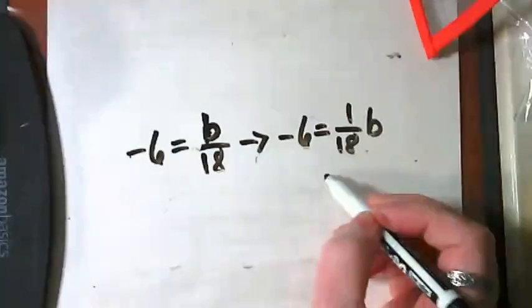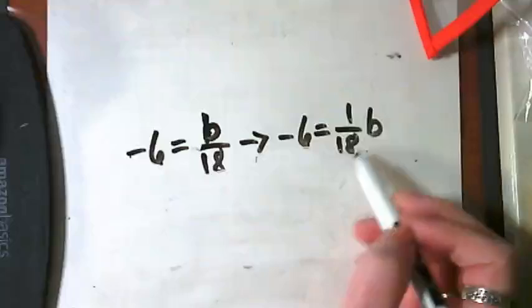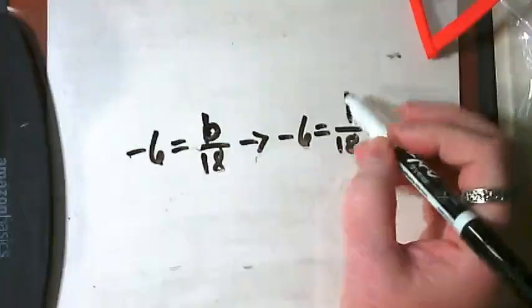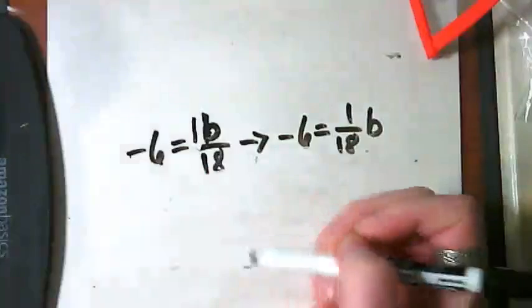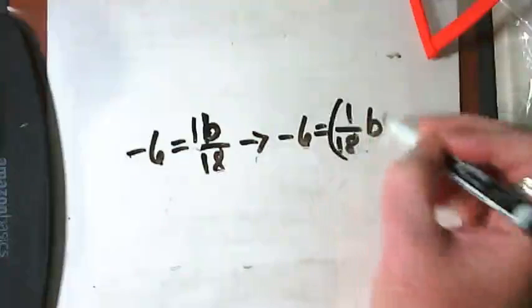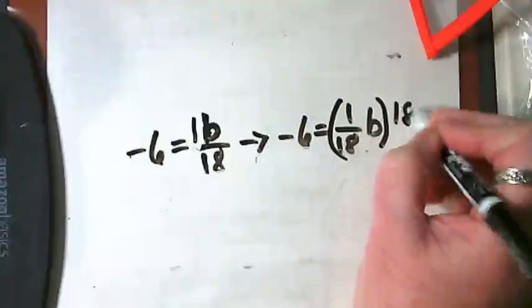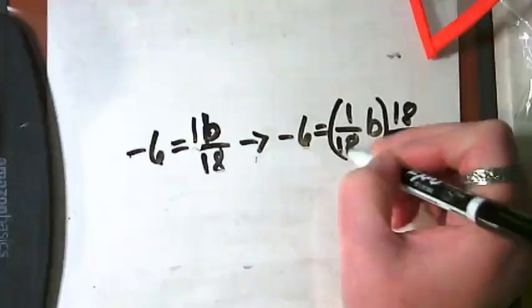So we've just established that a reciprocal is like a flipped version of the fraction. This has this invisible one that I've made visible here. Would you believe me if I then said that this is the reciprocal of this?